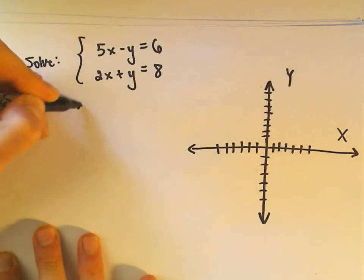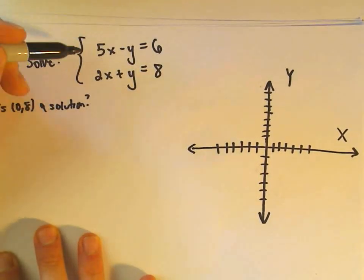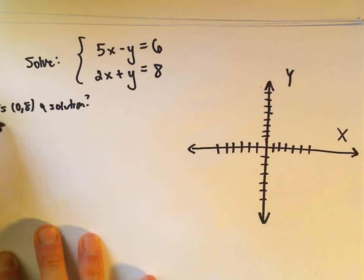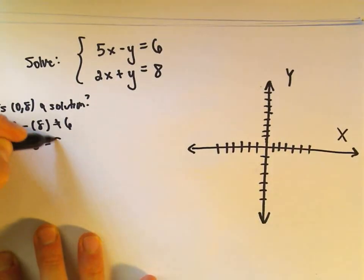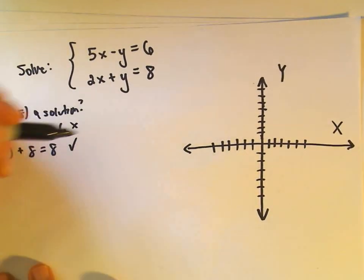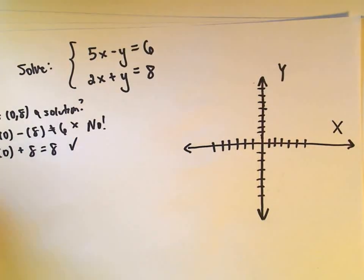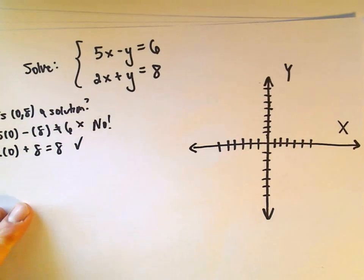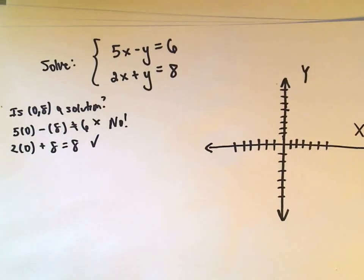And again the basic idea is we would plug it into both of them. Notice if you plug it into the first equation we get 5 times 0 minus 8, well that's certainly not 6, notice if you plug it into the second one we get 2 times 0 plus 8, and hey that does equal 8, but since it messes up the first equation, we would say no, it's not a solution. It has to make both equations happy at the same time is the idea.